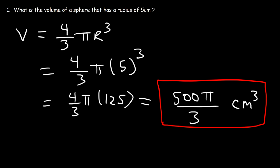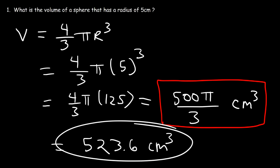If you want to get the decimal equivalent of that answer, just type it in your calculator: 500 pi over 3. This is using the exact value of pi. It's 523.6 cubic centimeters. So you can write your answer like that if you want to. But for the majority of this video, I'm going to write the answer in terms of pi.